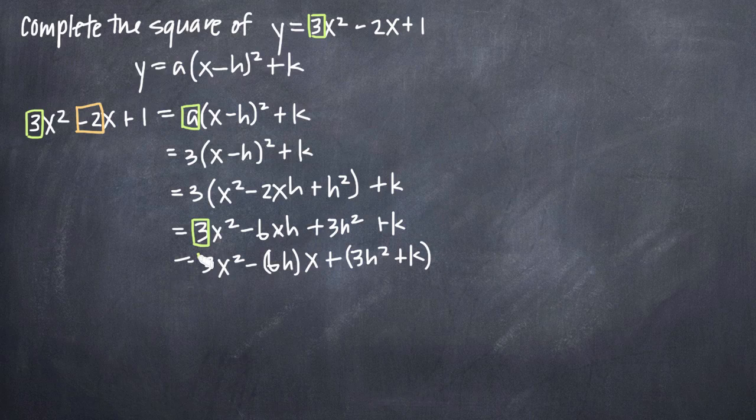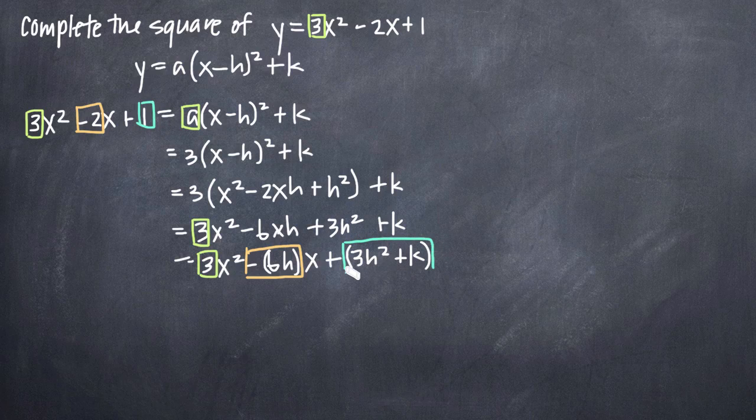Now, what we can do, we still have a here and we don't need to do anything with that, but the negative 2 we know must be equal to the negative 6h over here. Similarly, the positive 1 over here on the left hand side will be equal to the positive 3h squared plus k. So, we can set up that set of simultaneous equations and solve for h and k.